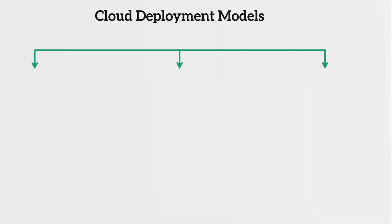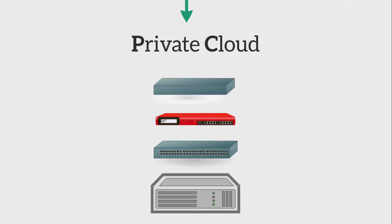Now let's shift our attention to the cloud deployment models. There are three different models you need to understand. The first model is a private cloud. Here we have our servers, our switches, our firewalls, routers, all that good stuff. That's a private cloud, which basically means a data center — our own data center. That's a fancy term for our own on-prem stuff.